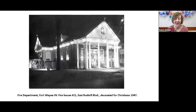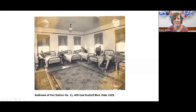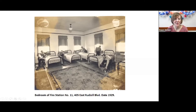Let me show you some pictures of the inside of this building — the pictures on the inside are from 1929. So we're going backwards in time a little bit, and this says 'bedroom of fire station number 11, 405 East Rudissel Boulevard, date 1929.' They've got some fancy curtains, a fancy rug, and you'll notice some spots on the picture — that's because it's old and probably got water damage. But it's still a really valuable picture because I can see this guy's getting his boots ready. Notice all the guys are wearing ties — I don't know if that was just for the photo or if that's really what they looked like when they were hanging out at the fire station.